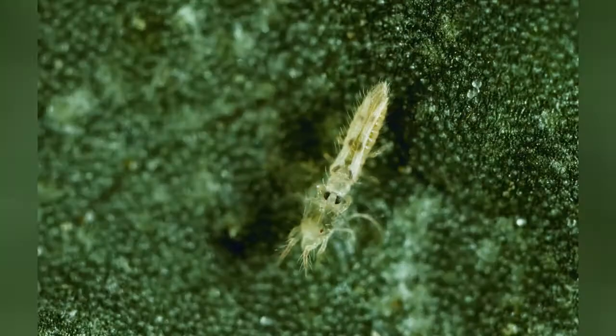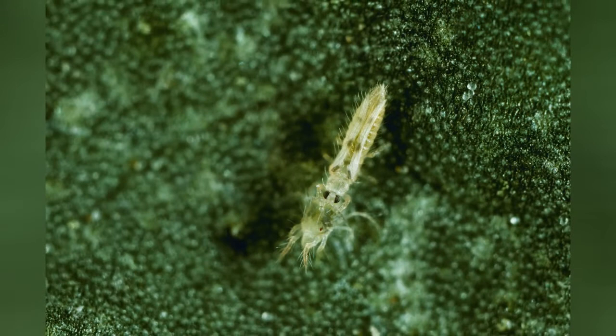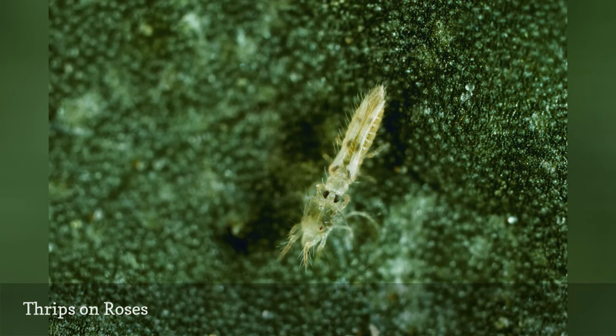Thrips are a common insect pest. Flower thrips are slender and brown, with yellow wings that feed on flower buds. Chili thrips, which are becoming an increasing problem in home gardens, are pale with dark wings. They feed on all parts of the plant.